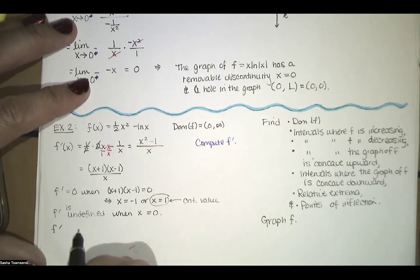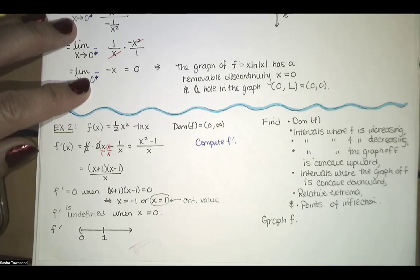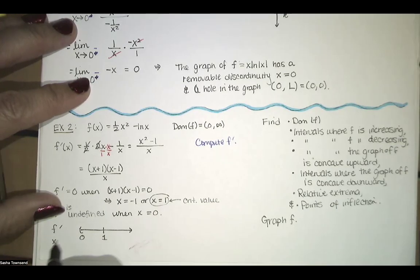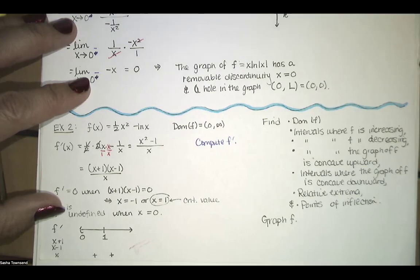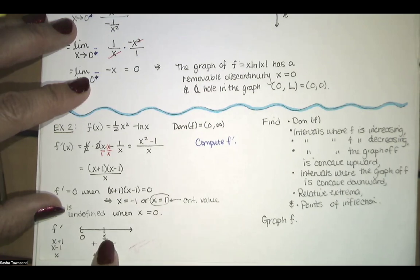Now we look at the sign of f prime on its domain, which starts at 0. We list the critical number on the number line, going from 0 to infinity with our critical number at 1. f prime equals x plus 1 times x minus 1 divided by x. On both intervals, x is positive, and x plus 1 is also positive. But x minus 1 changes sign at x equals 1.